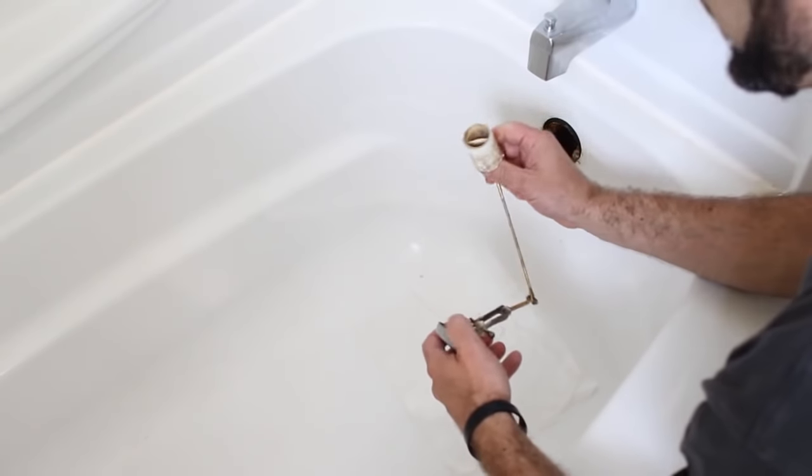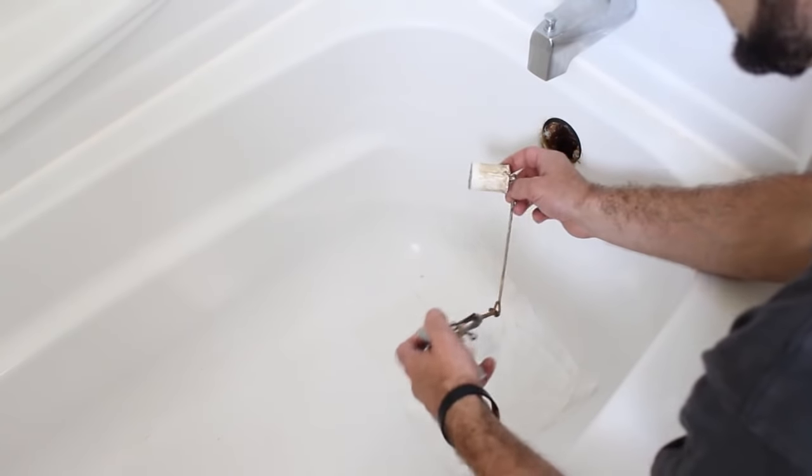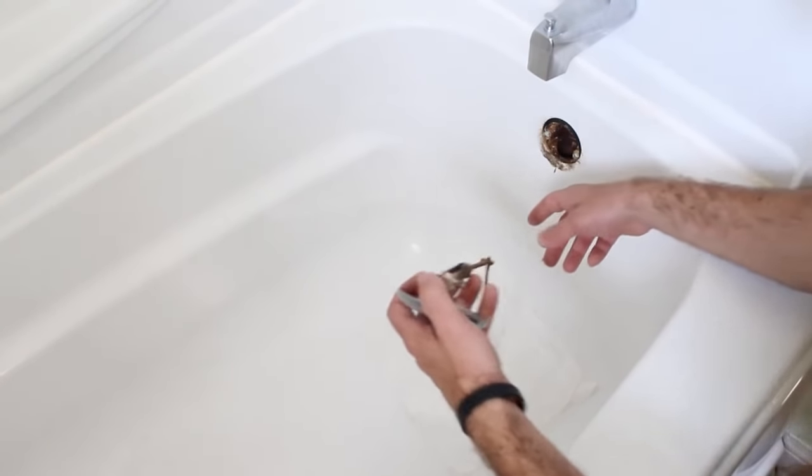Now, sometimes the plunger has hair all over it. In this case it does not, which means that the clog is down in the drain.